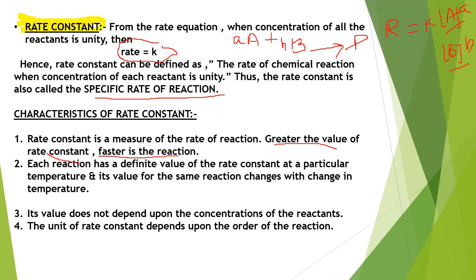Higher the value of rate constant, the reaction will proceed more faster and more spontaneously. If it has a lower value, the rate of reaction will be less. Moreover, the rate constant has a specific nature — for each and every reaction it has a definite value.